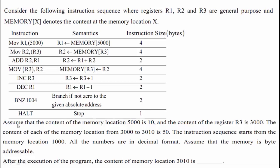Assume that the content of memory location 5000 is 10, and the content of register r3 is 3000. The content of each memory location from 3000 to 3010 is 50. The instruction sequence starts from memory location 1000. All numbers are in decimal format, and the memory is byte addressable.